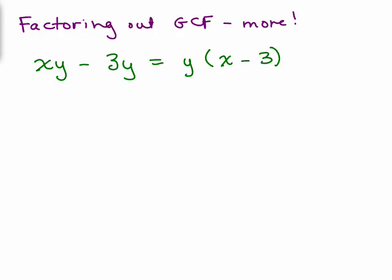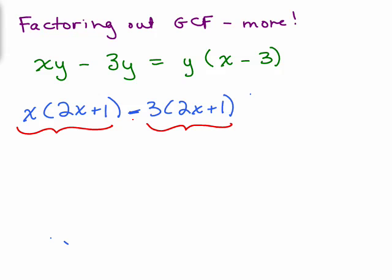Now instead, let's say this problem had been x times 2x plus 1 minus 3 times 2x plus 1. This actually is similar to xy minus 3y except that the common factor is 2x plus 1 as opposed to y. So this is not factored because there's a big minus sign here, but each term is factored. So you can think of this as the difference of two terms.